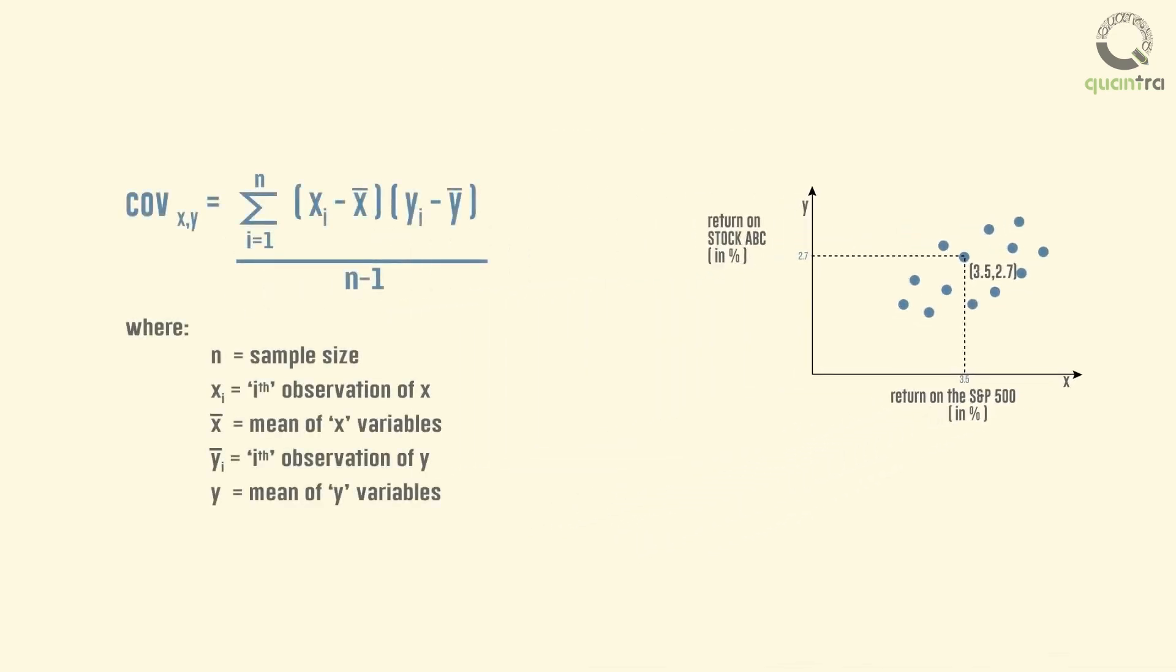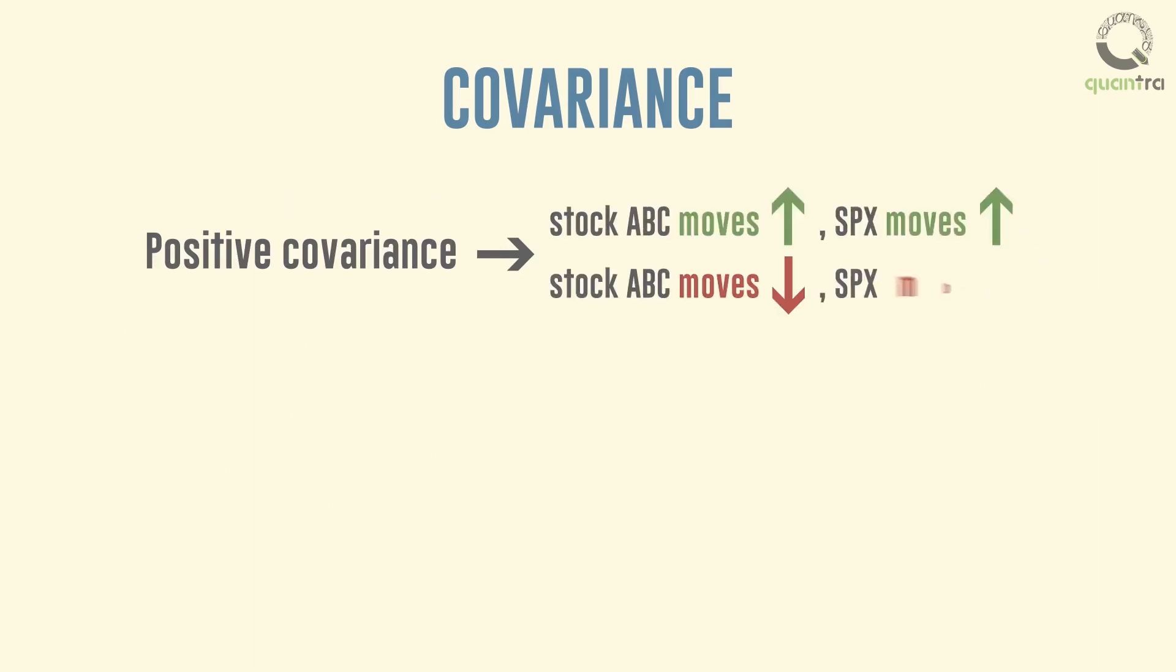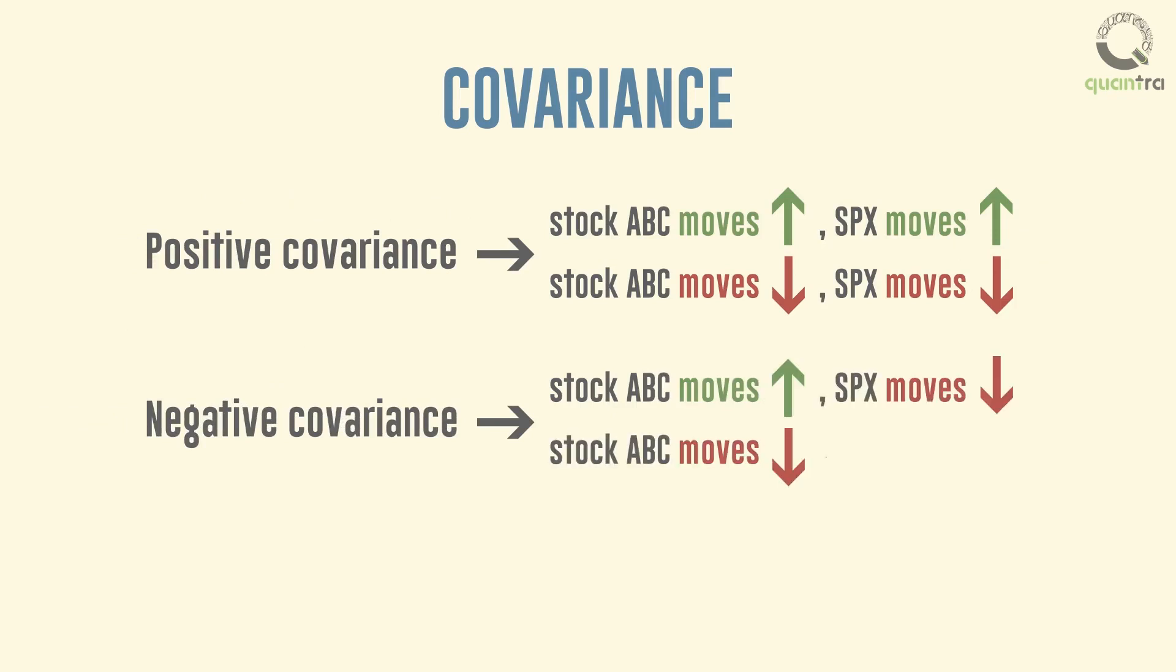The degree to which these variables, that is, return on S&P 500 index (or x) and return on stock ABC (or y), move together is called covariance. Covariance captures the linear relationship between two random variables. Here, a positive covariance implies that the market and the stock tend to move in the same direction, whereas a negative covariance implies that they tend to move in the opposite direction.